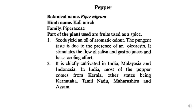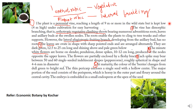The economically important part of the plant is its fruits, which are used as spice. The seeds yield an essential oil of aromatic odor, and the pungent taste is due to the presence of oleoresin, which stimulates the flow of saliva and gastric juices and has a cooling effect. It is chiefly cultivated in India, Malaysia, and Indonesia. In India, most pepper comes from Kerala, with other producing states being Karnataka, Tamil Nadu, Maharashtra, and Assam.